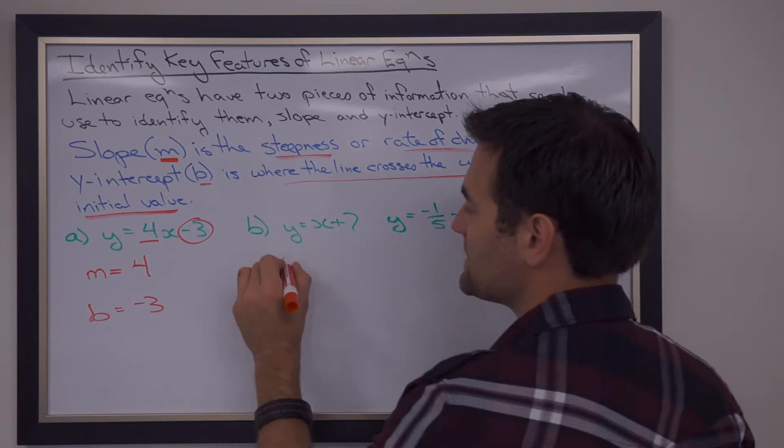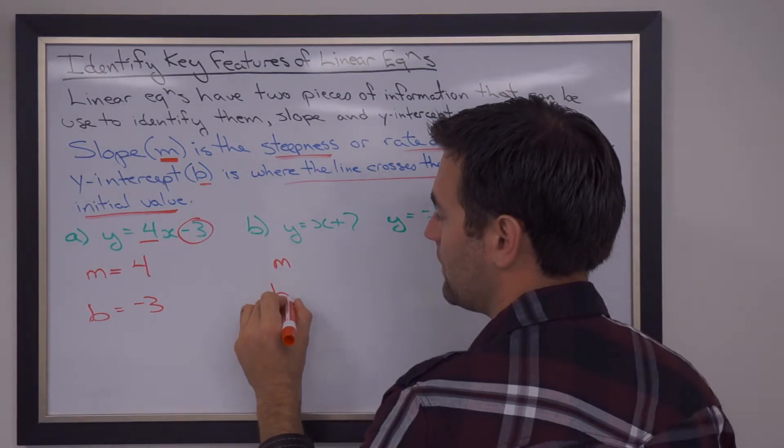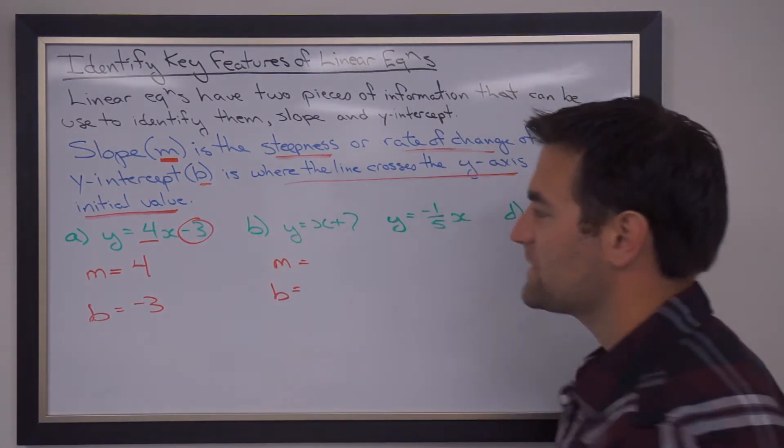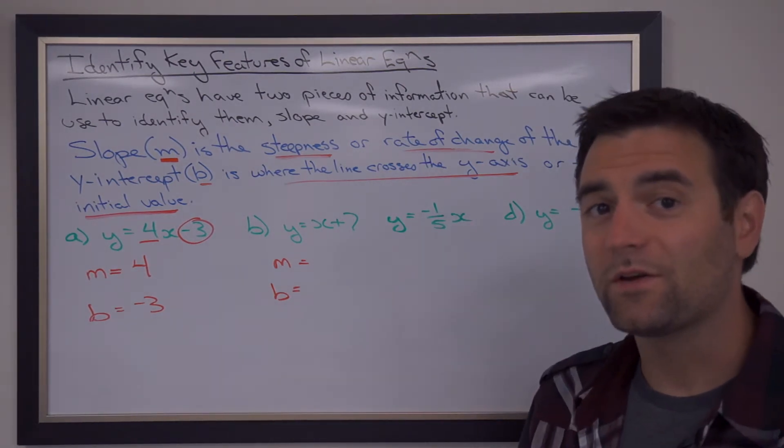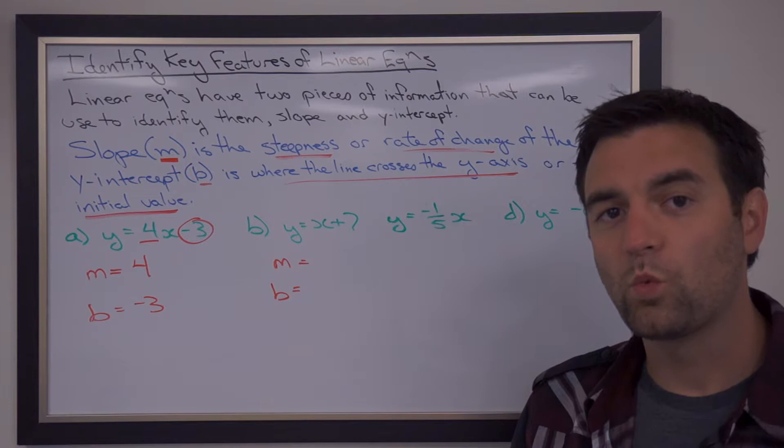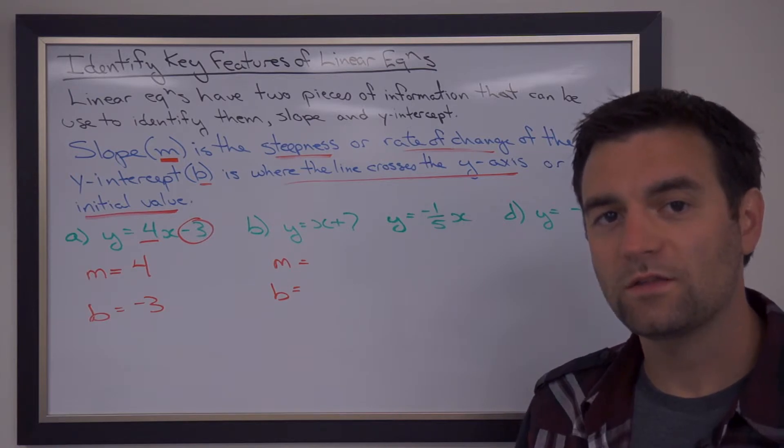If we look at this next example, we have y equals X plus 7. There is no number beside the X, but there is an X there. There is one X in the equation, and so the slope in this case is 1.